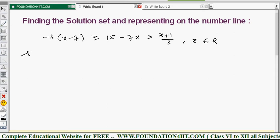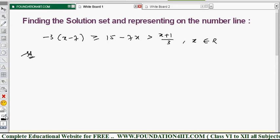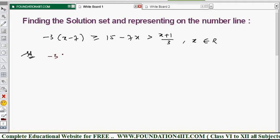So let us solve this problem. We will take these two parts, first two and last two: minus 3x minus 7 greater than or equals to 15 minus 7x, and 15 minus 7x is greater than x plus 1 divided by 3. These two will solve simultaneously.